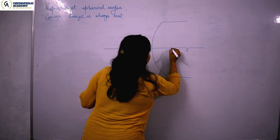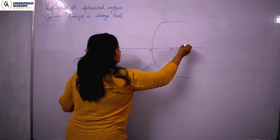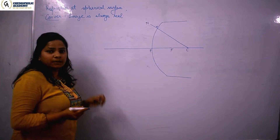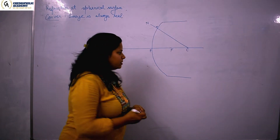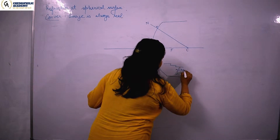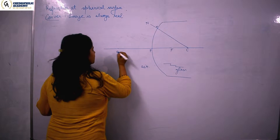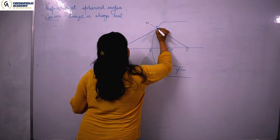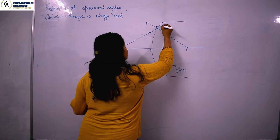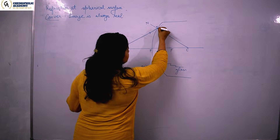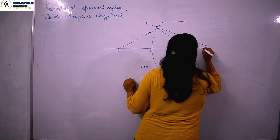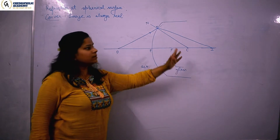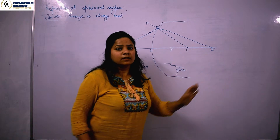Let's take a point on the surface. This is the normal at that point. Now let's see how refraction takes place in this case. This is the material inside the glass and this is air. This is your object. Light incident from the object reaches this point. Now it has to go straight, but because it is going into a denser medium it will bend towards the normal, and you will get the image somewhere over here. So this is the object, this is the image — this is a real image.